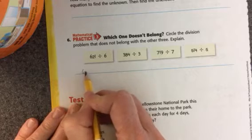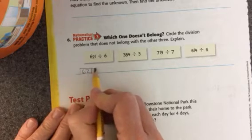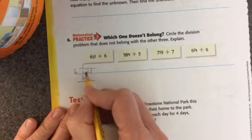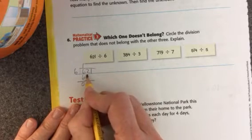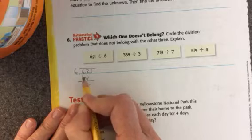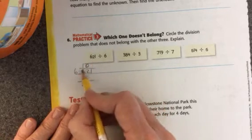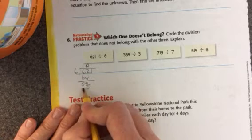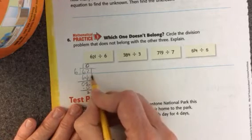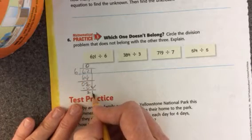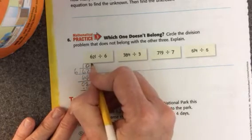So I'll do 621 divided by 6 right here. 6 goes into 6 one time. Okay. 6 minus 6 is 0. I'll bring down a 2. 6 goes into 2 0 times. 0 times 6 is 0. When I subtract, I get 2. And then I'll bring down the 1. 6 goes into 21 3 times.